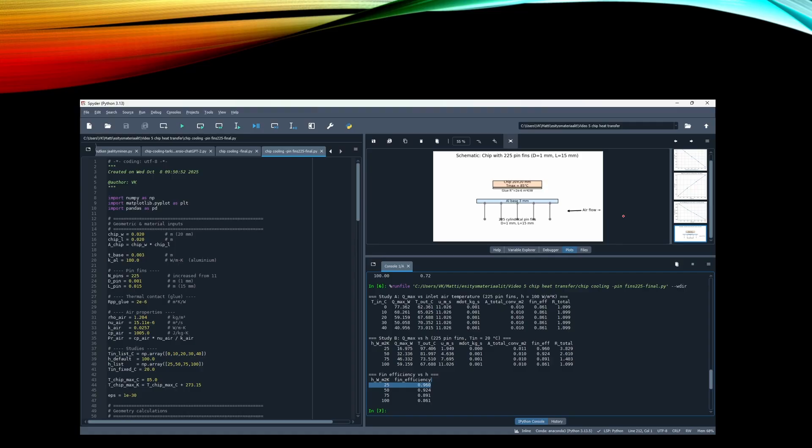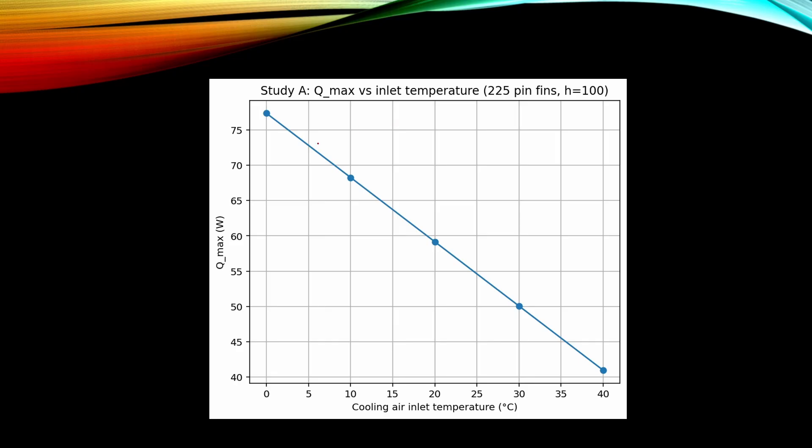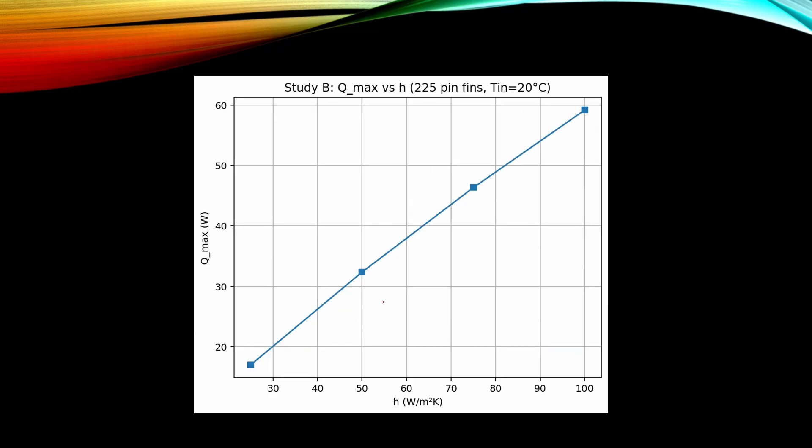And this Python code also gave very nice plots of the results and the table to analyze the results. For example, here we can see the chip maximum power as a function of cooling inlet temperature. In this case the convective heat transfer coefficient was 100. Here in the next one we can see the maximum power as a function of heat transfer coefficient.